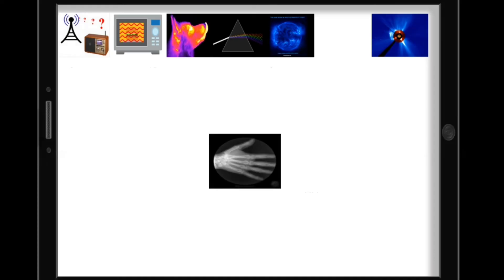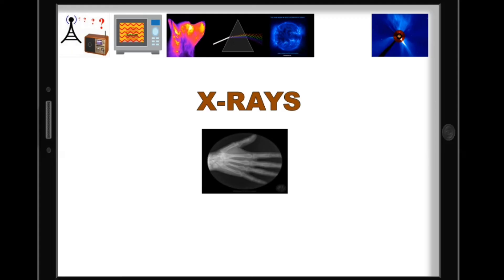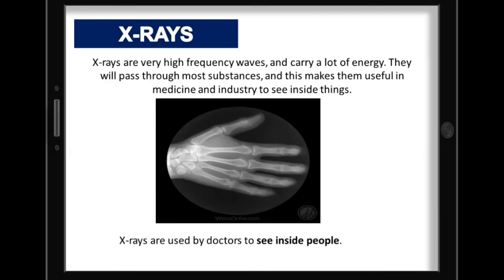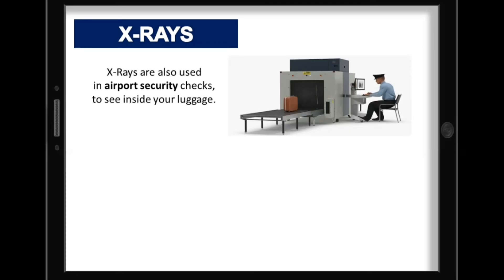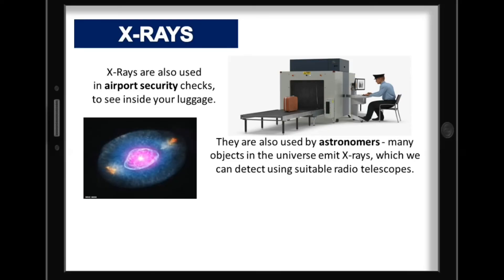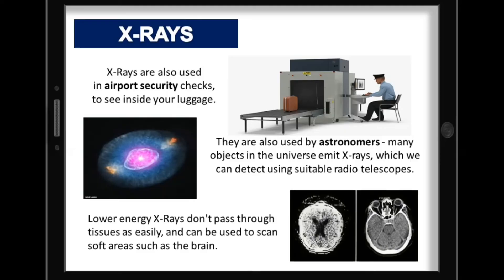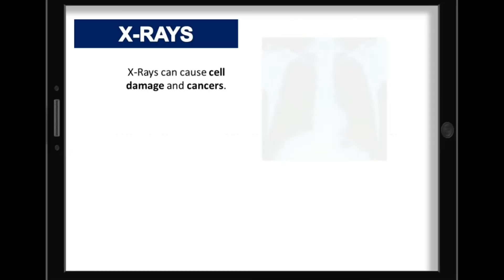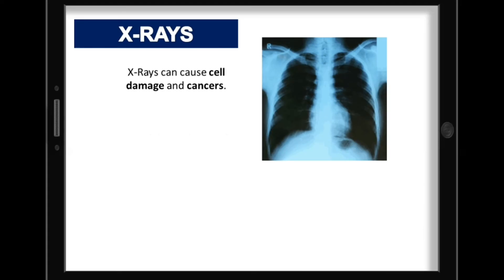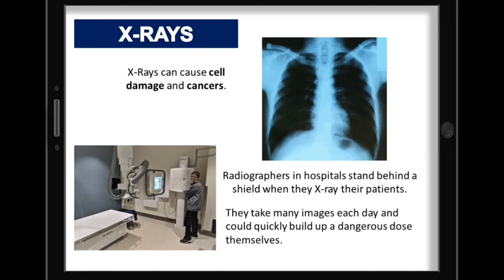Classified as part of ionizing radiation, this type of EM wave is known as X-rays. X-rays are very high-frequency waves that carry a lot of energy and will pass through most substances, making them useful in medicine and industry. Doctors use X-rays to see inside people, and they are used in airport security to see inside luggage. Many objects in the universe emit X-rays detectable by radio telescopes. Lower energy X-rays can scan soft tissue areas such as the brain. Too much X-ray exposure can cause cell damage and cancers, which is why radiographers stand behind a shield when X-raying patients.